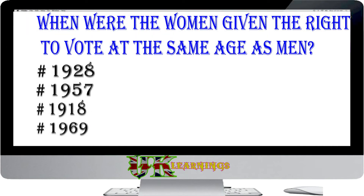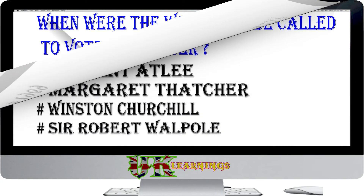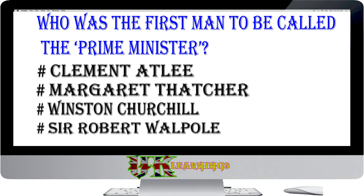When were women given the right to vote at the same age as men? 1928, 1927, 1957, 1969. The answer is 1928. Emmeline Pankhurst was born in Manchester in 1858. She set up the Women's Franchise League in 1889, which fought to get the vote in local elections for married women. Shortly before Emmeline's death in 1928, women were given the right to vote at the age of 21, the same as men.